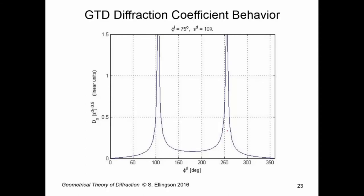Now, we can compute the diffraction coefficient behavior. In this plot, I have φ super d in degrees going from 0 to 360 degrees. So, all 360 degrees are included here. On the vertical axis, I have diffraction coefficient. We have only the soft diffraction coefficient. So, it's d sub s. Now, remember, diffraction coefficients have units of the square root of distance. So, to make this unitless, I have simply multiplied it by 1 over the square root of the distance from the point of diffraction to the field point. So, that's what this is all about. Just trying to make it unitless.